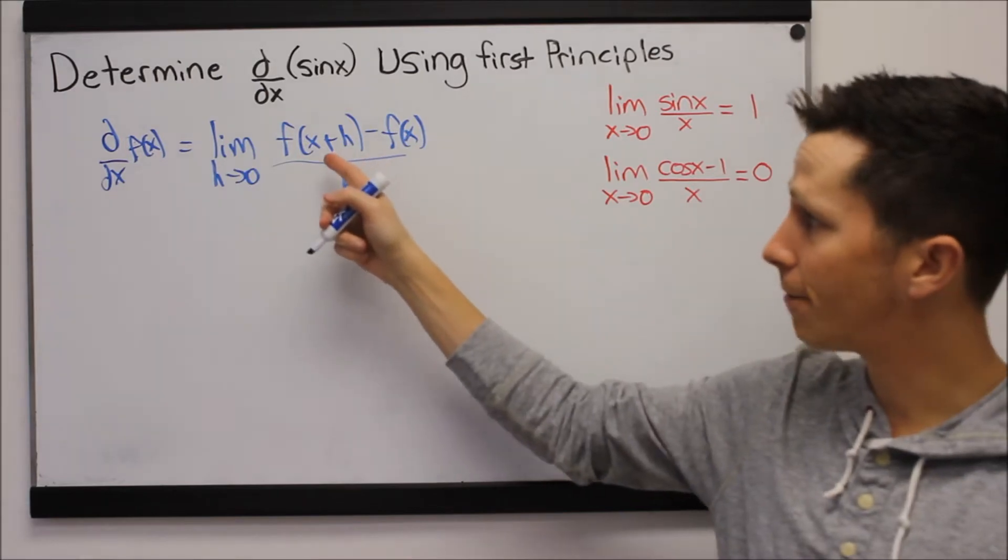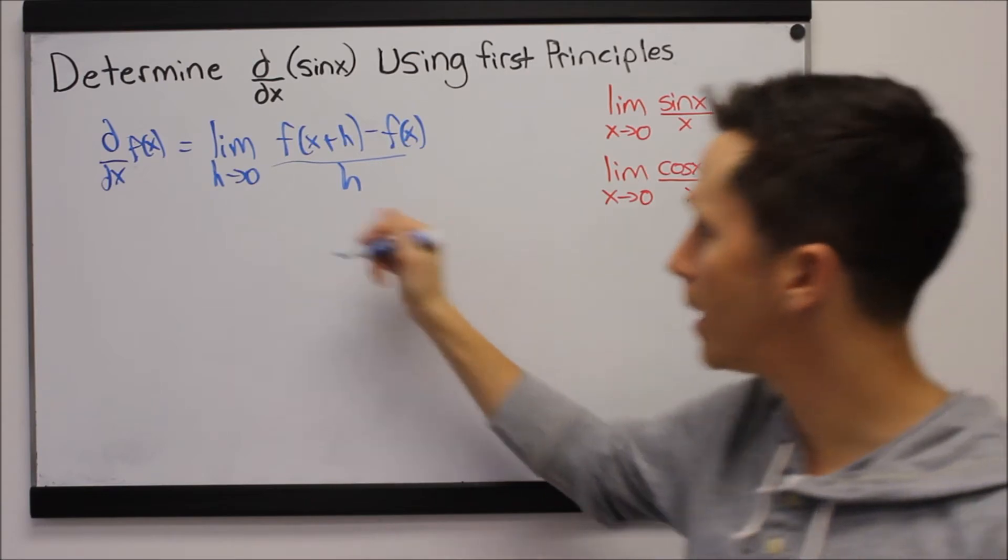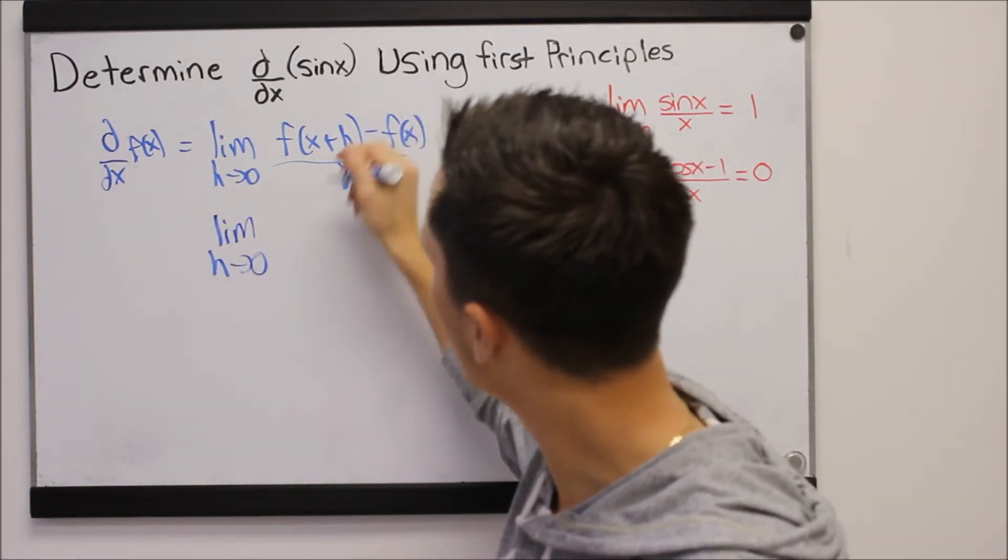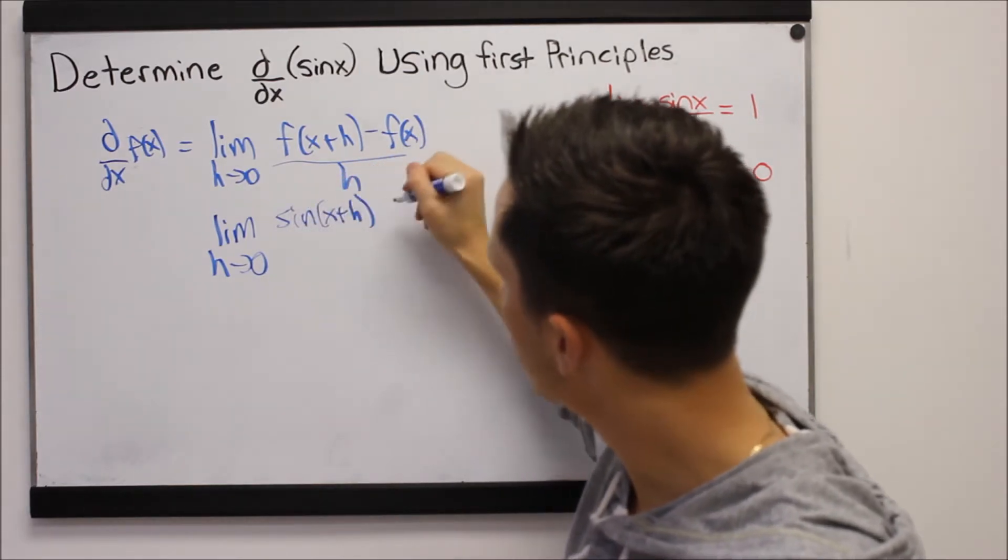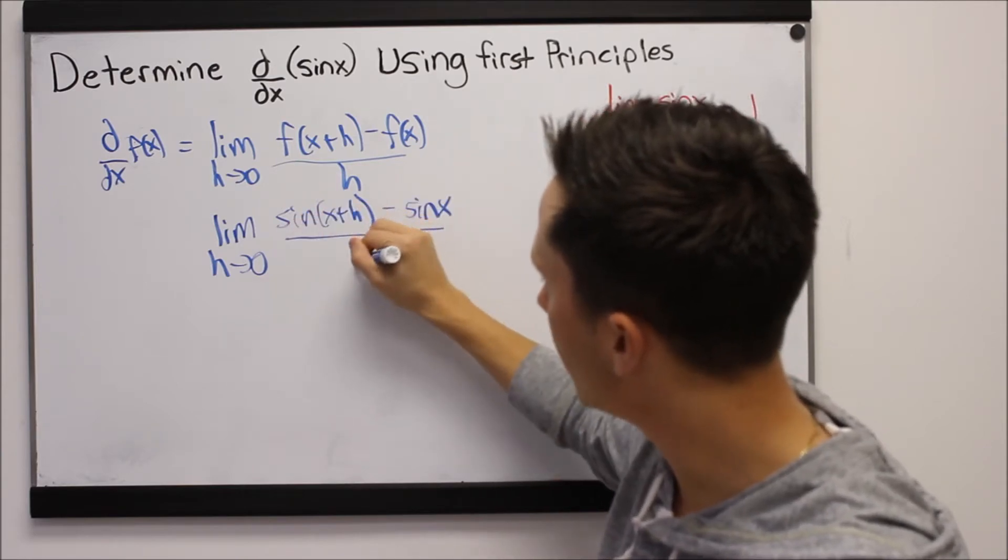So the limit is f(x+h). That means we just put x plus h in anywhere we see an x. So this is the limit as h goes to zero of sine(x+h) minus sine(x), that's f(x), over h. Perfect.